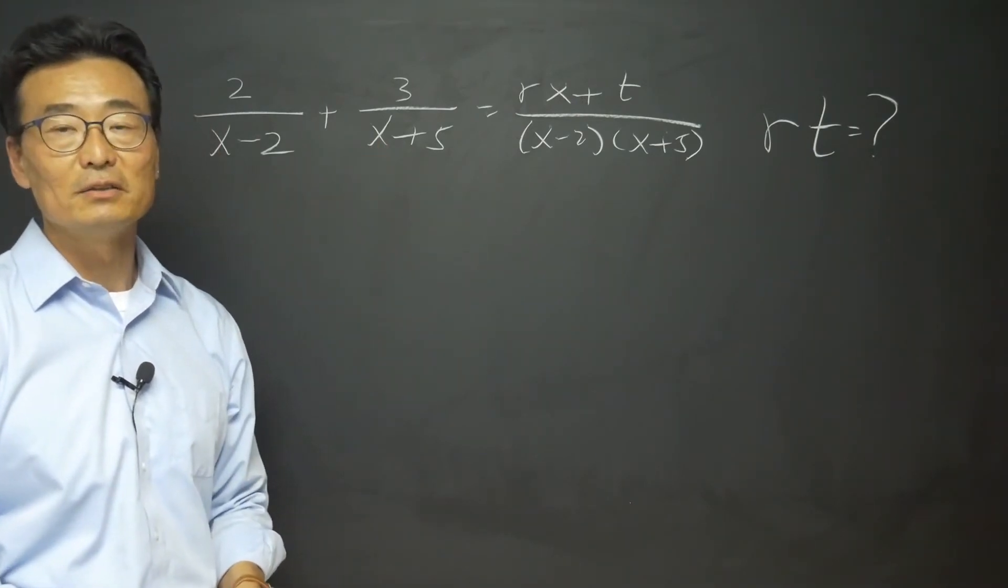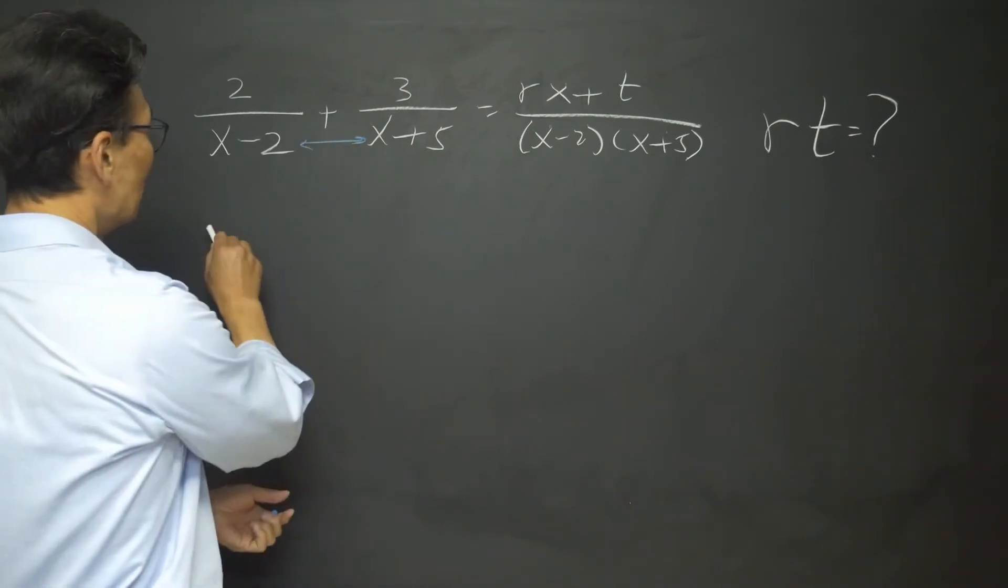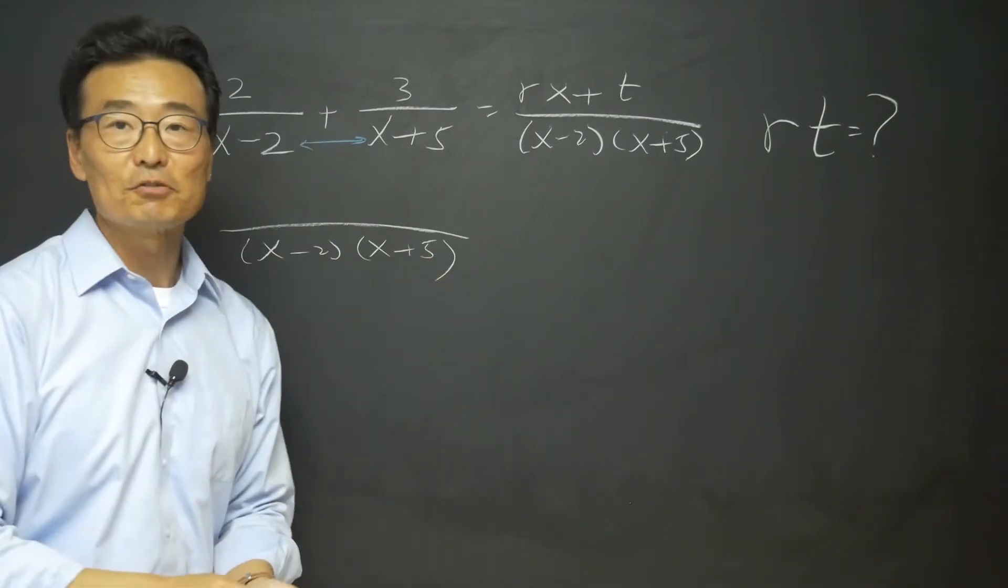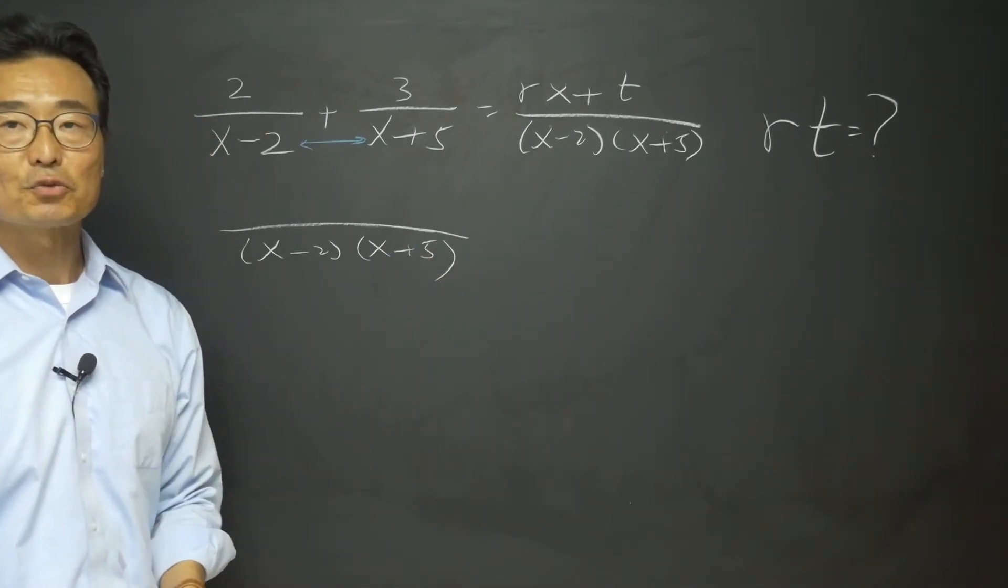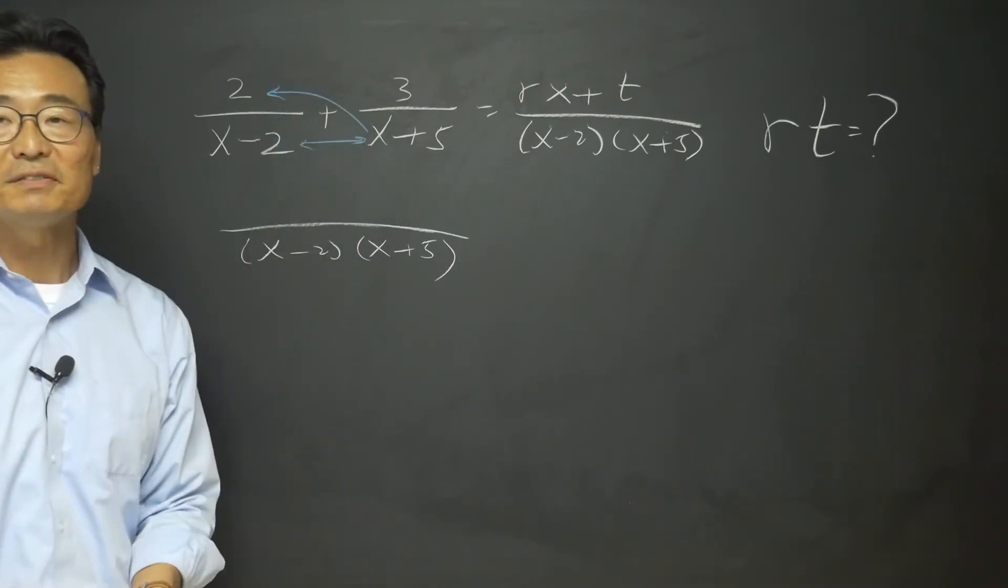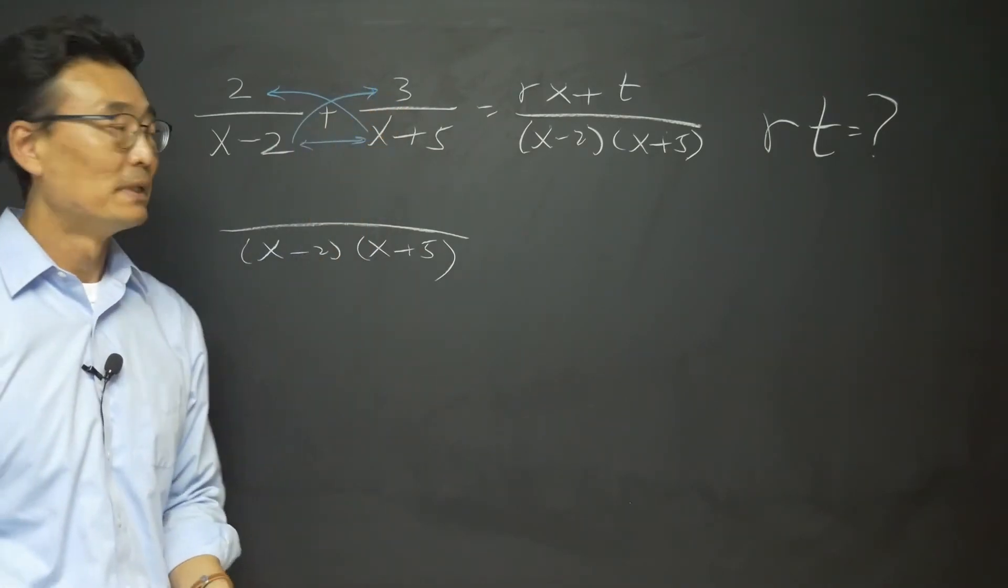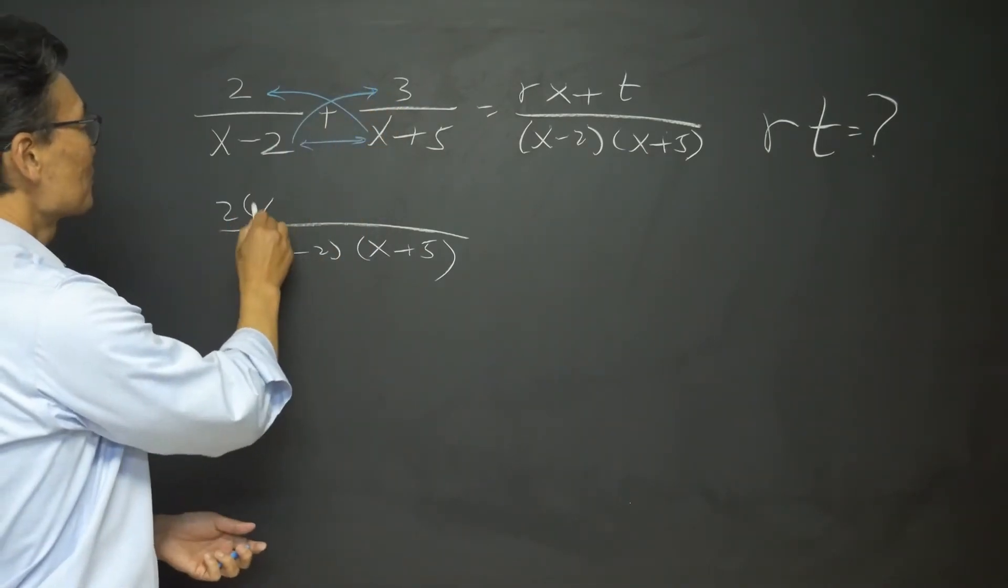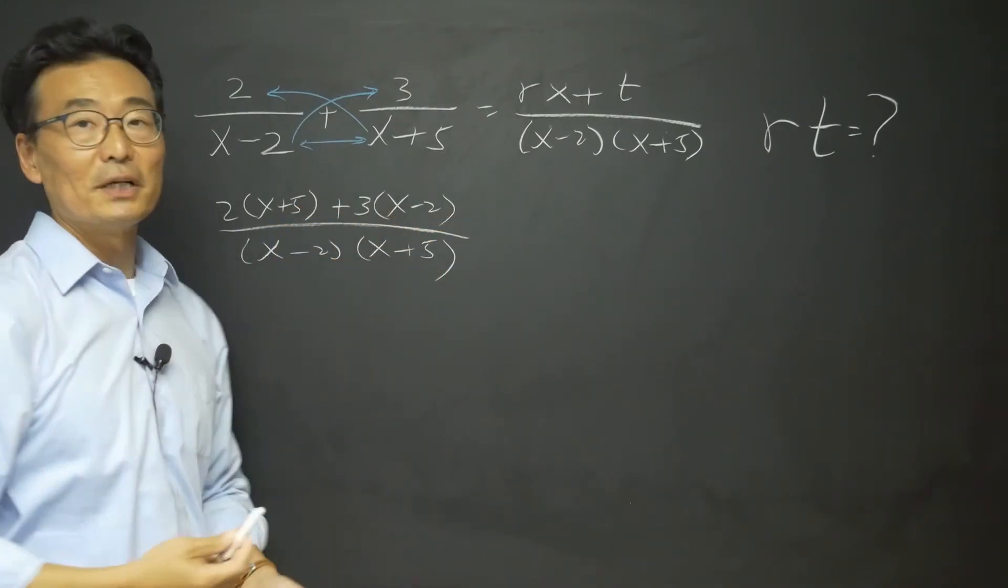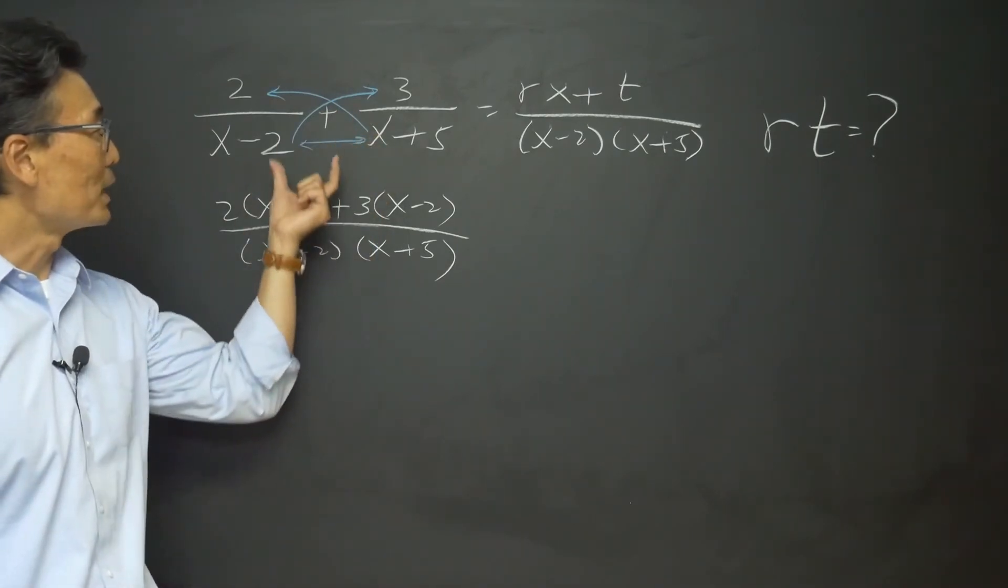What it is, is that I multiply across for the denominator, meaning x minus 2 times x plus 5. And then the crisscross is such that I take the bottom right, multiply to the top left, and take the bottom left, multiply to the top right. So we get 2 times x plus 5 plus 3 times x minus 2.